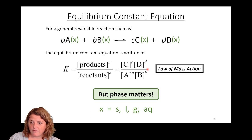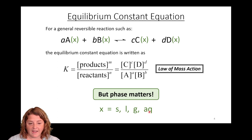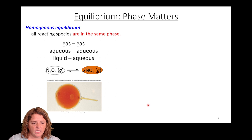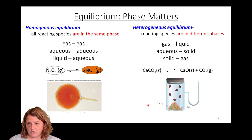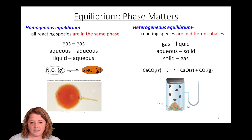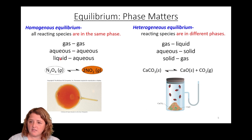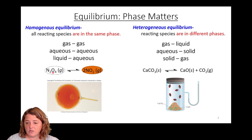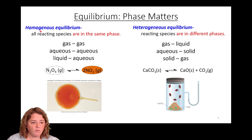What we didn't talk about last time is that the phase of those reactants matters. We'll be focusing on three phases: solid, liquid, gas, and aqueous solution — reactants or products dissolved in water. We've got homogeneous equilibrium versus heterogeneous equilibrium. An example of homogeneous equilibrium would be N2O4 gas and NO2 gas — they're both gases, same phase.